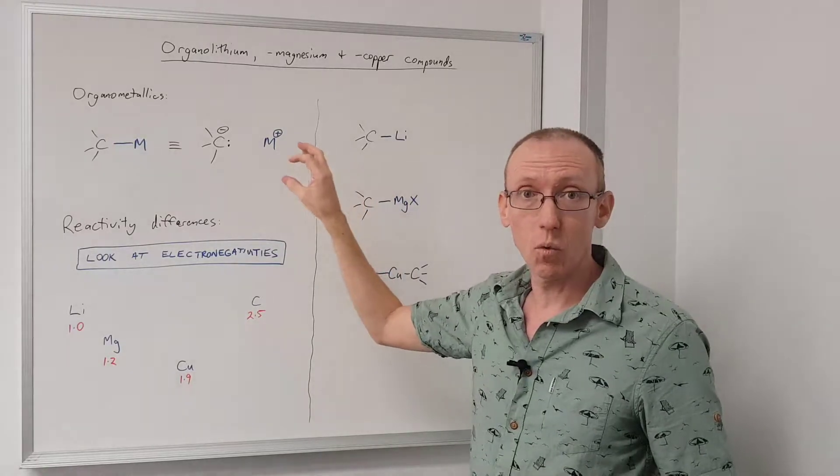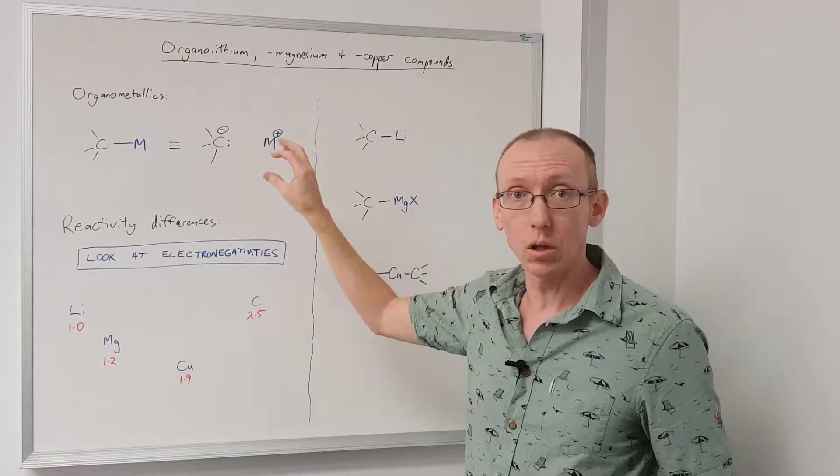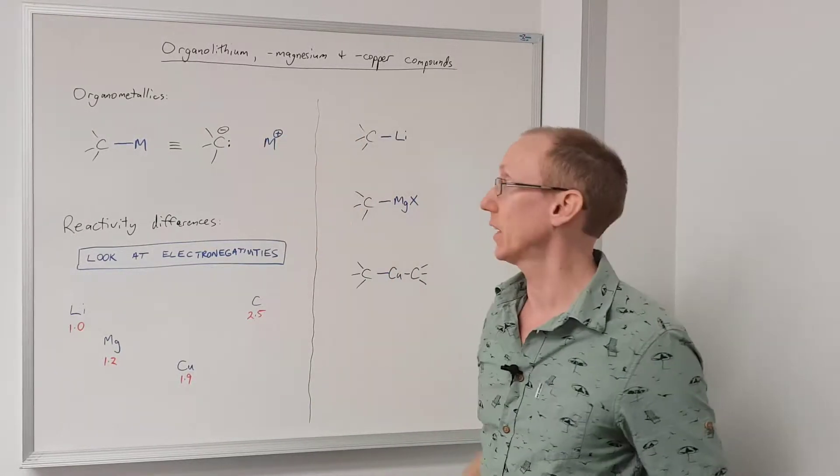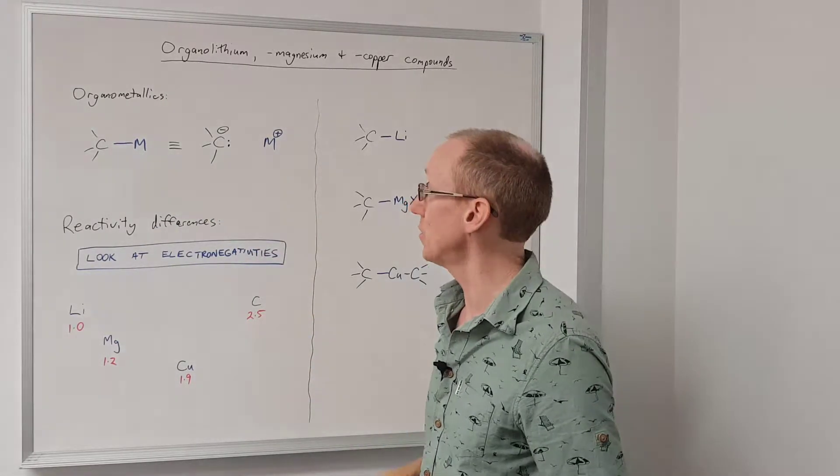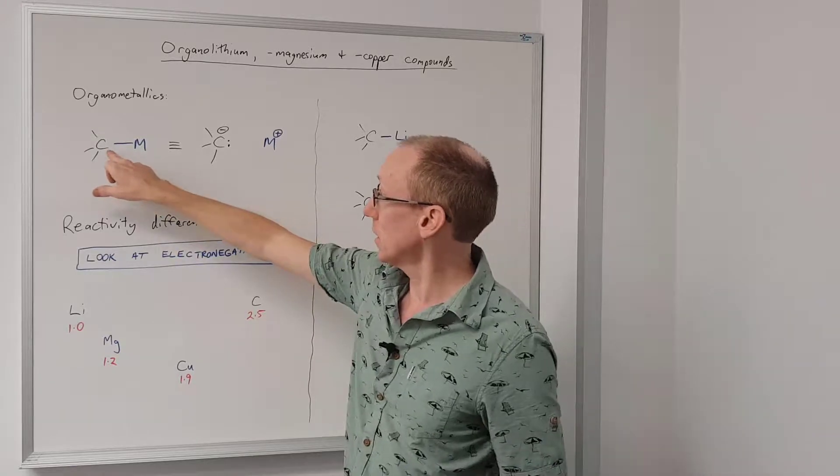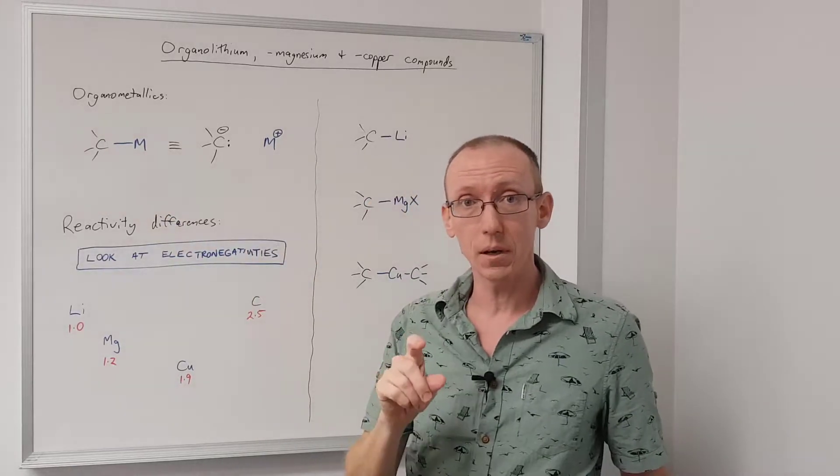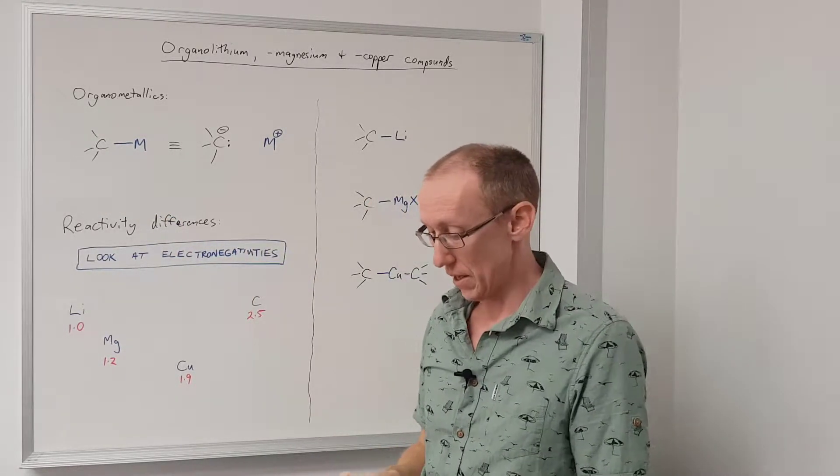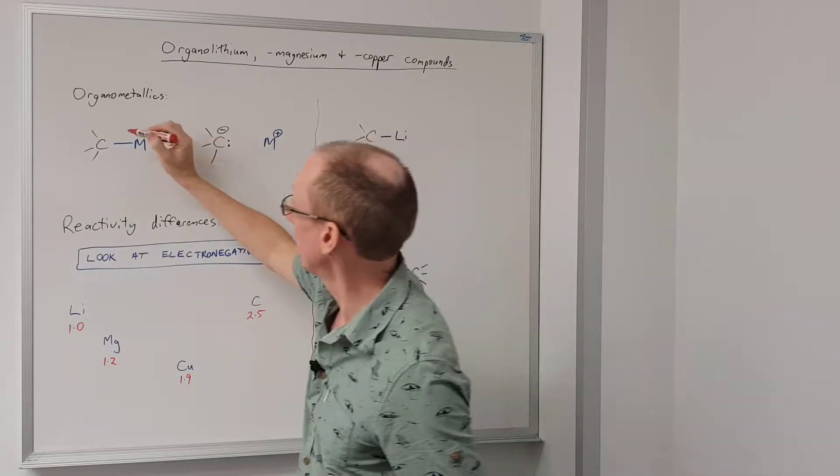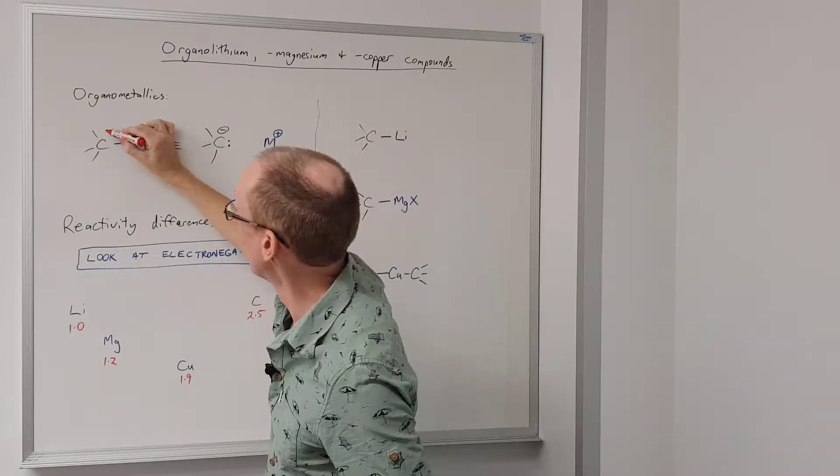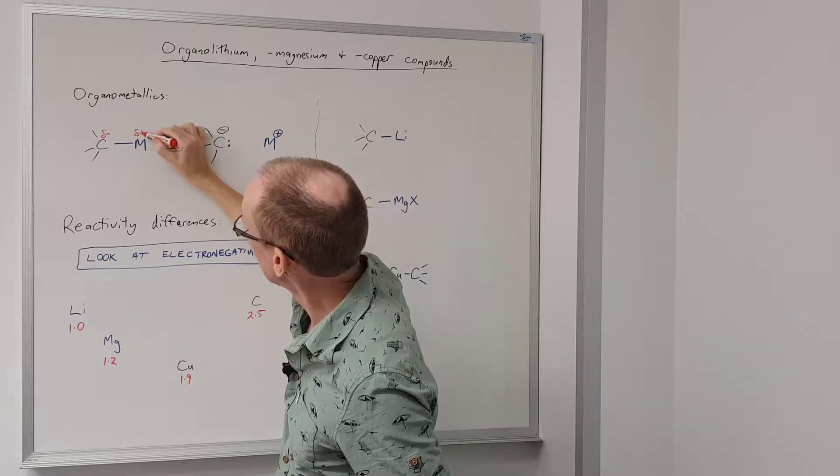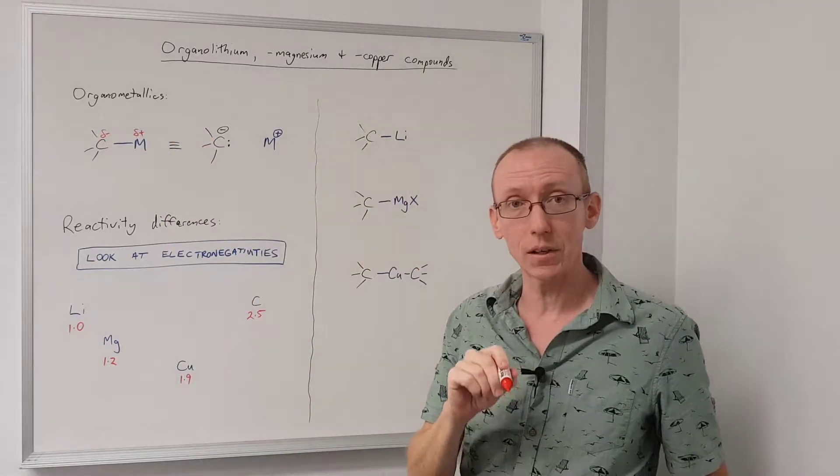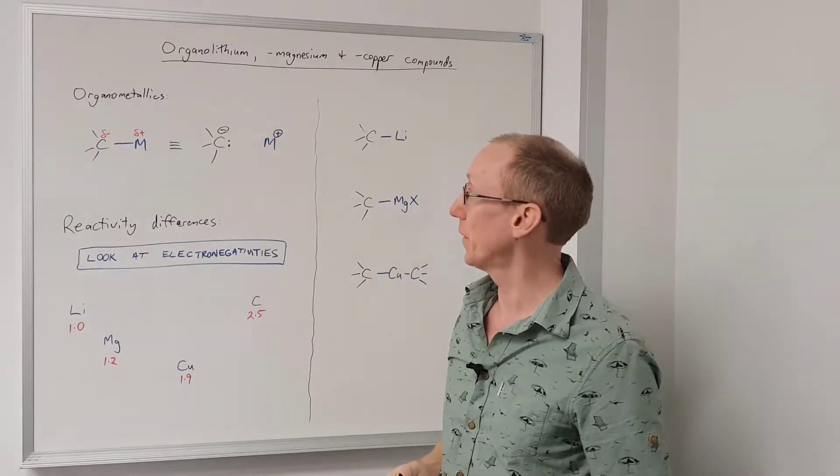We're going to focus on what is the role of the metal, or how does that affect the reactivity as we change the metal part of an organometallic reagent. If we look at the electronegativity of carbon versus metals, we will see that carbon is more electronegative than the metal. And so we would have this delta negative at carbon and delta positive at the metal.